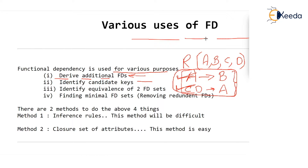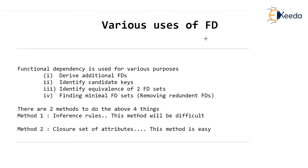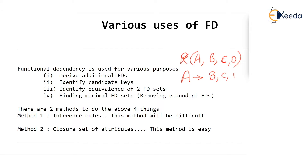The second and most important use is to find the candidate key of a given table. Recall that a candidate key is an attribute or a set of attributes which can determine all other attributes. As an example, suppose we are given table R with four attributes A, B, C, D, and we are told that A determines B, C, D. That means, given the value of A, we can determine all other attributes of the table — B, C, and D. Then such an attribute is called the candidate key of the table.